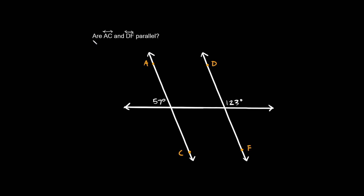Here's the last type of problem we're going to go over. This one says are lines AC and DF parallel? One angle pair you should be familiar with is supplementary angles — two angles that add up to 180 degrees, normally found along a line. Here it gives us 57 degrees, so this angle must be 180 minus 57, which is 123 degrees. Now we know this angle and this angle — they're alternate exterior angles and they are congruent, both 123 degrees. So since we have alternate exterior angles that are congruent, these two lines are parallel.